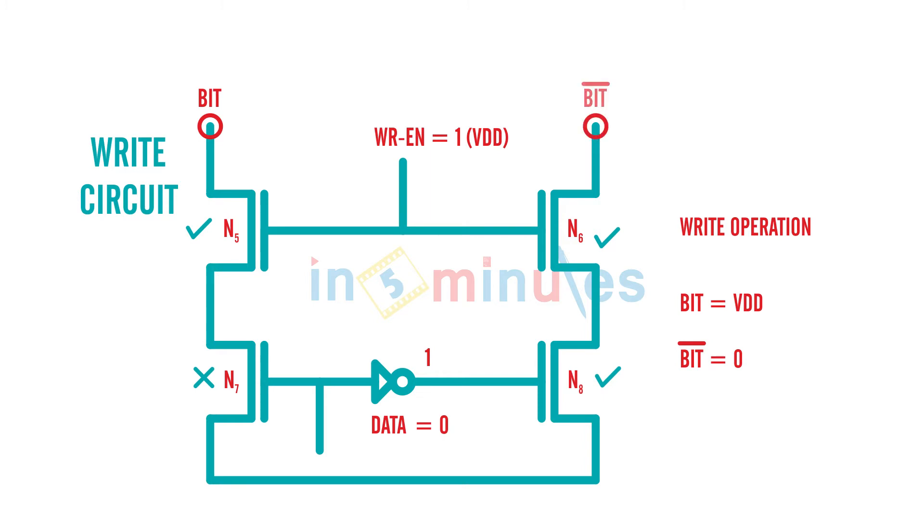Think that this point was called bit and this point was called bit bar. What's going to happen is because N5 and N6 are on, bit is going to be passed here, and this point is also going to be bit bar.